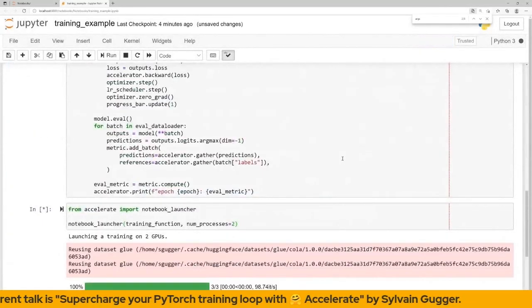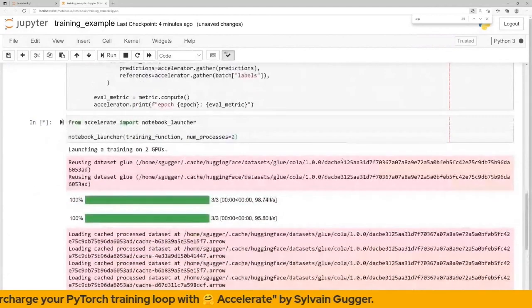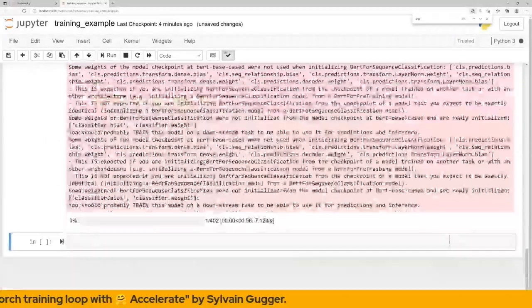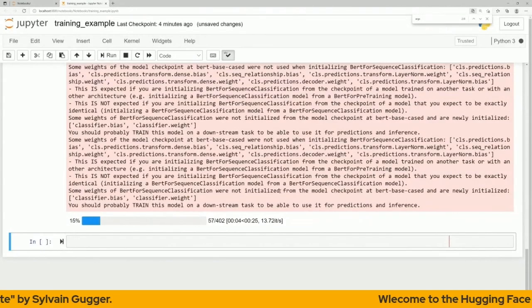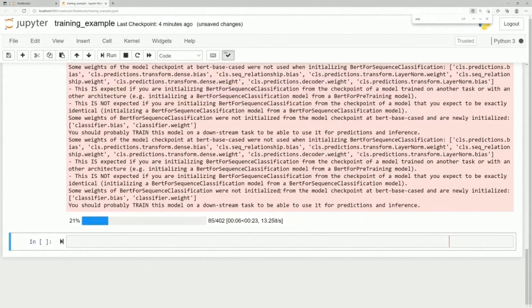We can see the training function is launched twice as many of the logs are duplicated before the training starts. Since I added a few lines to only display the progress bar and print on main process, the training logs only appear once. This concludes my presentation of the Accelerate library. I hope you enjoyed it and that it will give Accelerate a try the next time you need to use a custom training loop. If it doesn't work as expected, please let us know on the forums or on GitHub.